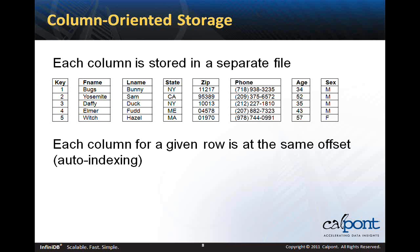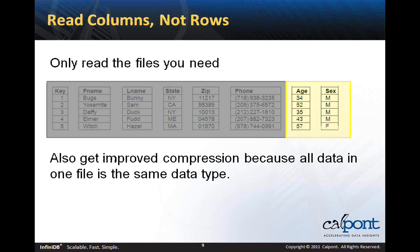So how does a columnar database work? In a columnar database, each column is stored in a separate file. One file contains only the key column, another file contains only the first name column, another contains the state, and so on. Each column in a given row is at the same offset in its respective file, a mechanism sometimes referred to as auto-indexing, because any column can be used almost like an index. When you scan a column and find the value you want, the offset of that column corresponds to the offsets of the other columns in that row in their respective files. Because each column is stored in its own file, you only have to read the files you need and skip all the columns not in your query. This also results in improved compression, because all the data in a single file is of the same data type.